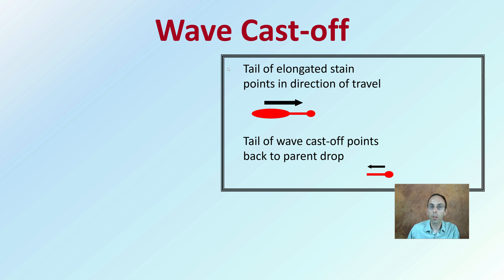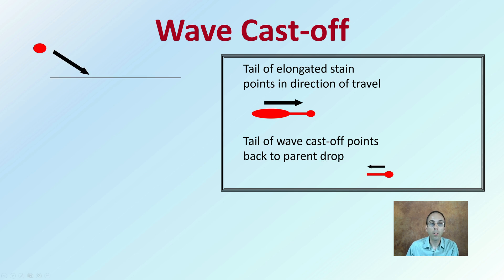First off, wave cast-off. The tail of the elongated stain points in the direction of travel. That's important when determining where the blood traveled and its direction of travel. The tail of the wave cast-off points back to the parent drop.